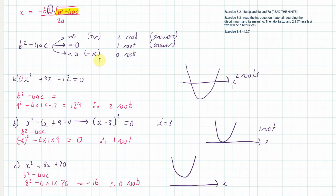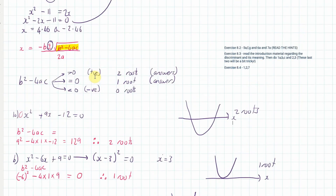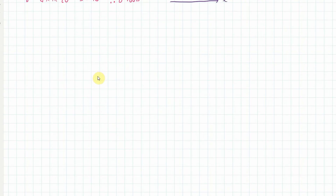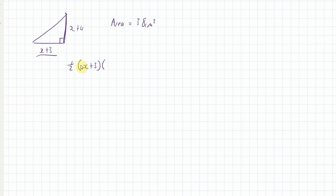Now one example from exercise 8.4 — I'll do example three. We have a right-angle triangle where the base is (x + 3) and the height is (x + 4), and the area is equal to 38 cm². We use the formula: half times (x + 3) times (x + 4) = 38.